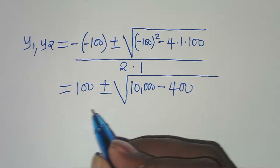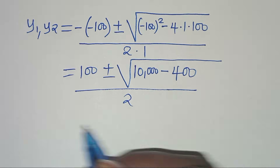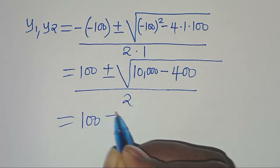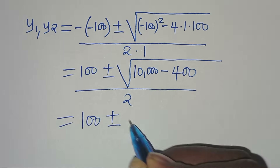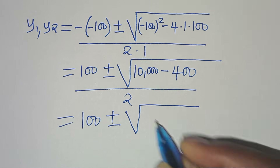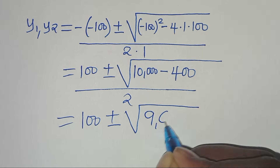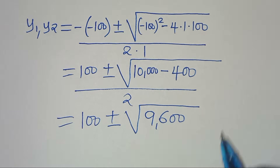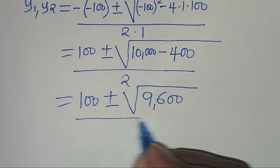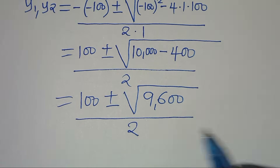This simplifies to 100 plus or minus the square root of 9600, everything divided by 2.